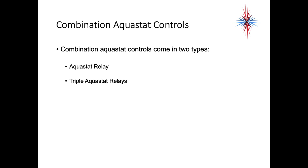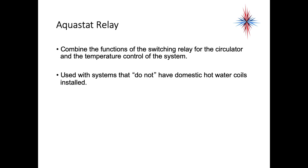There are also combination aquastat controls, and these are what you'll see most often. They come in two types: aquastat relays and triple aquastat relays. Aquastat relays combine the function of the switching relay for the circulator and the temperature control of the system.